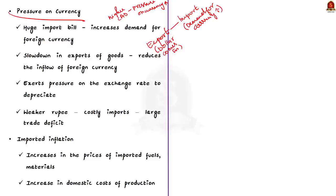There might be a question in the preliminary examination based on these facts. In simple words, if a country exports more than its imports, there is high demand for its goods and thus for its currency. The economics of supply and demand dictate that when demand is high, prices rise and the currency appreciates. In contrast, if a country imports more than it exports, there is relatively less demand for its currency, so it depreciates or loses value.